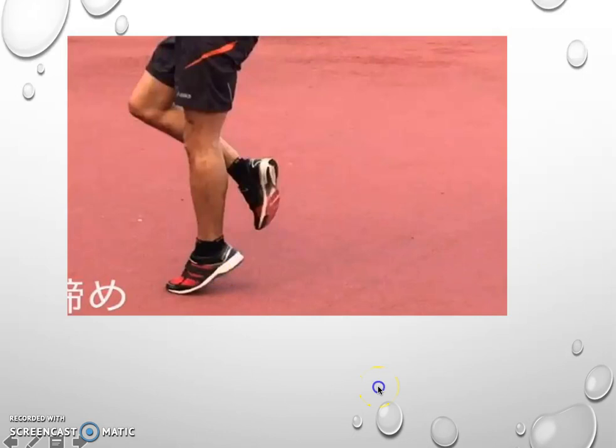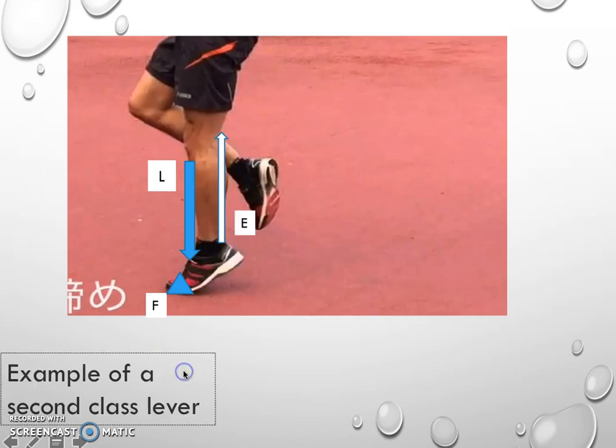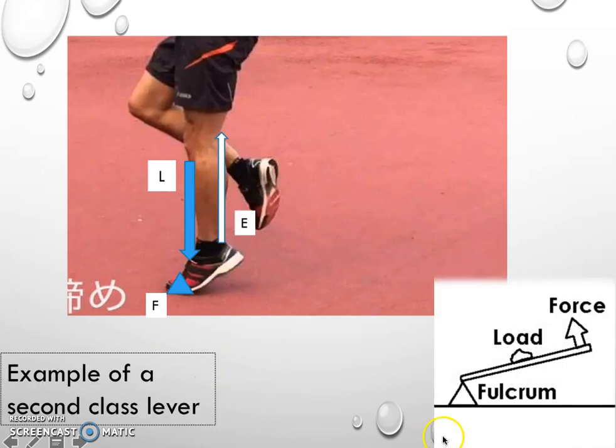Let's have another look at a class two lever. This one here we have the fulcrum at the front where the movement is rotating around, that's recognized as a triangle. The load is the body here going through that bone, that's where all that load is taking place. And then the effort here is the gastrocnemius and soleus. So F, L, E, that will be our second class lever.